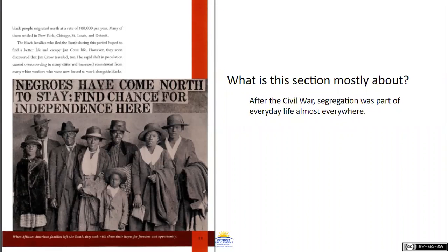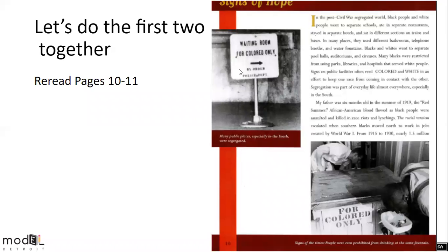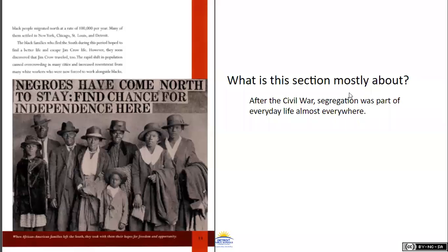What is this section mostly about? After looking at those two pages, seeing the pictures, and thinking about all the things that it's saying — a good gist for this section should be that after the Civil War, segregation was a part of everyday life almost everywhere. Even though slavery ended, it didn't mean that things were equal; things were still segregated everywhere.